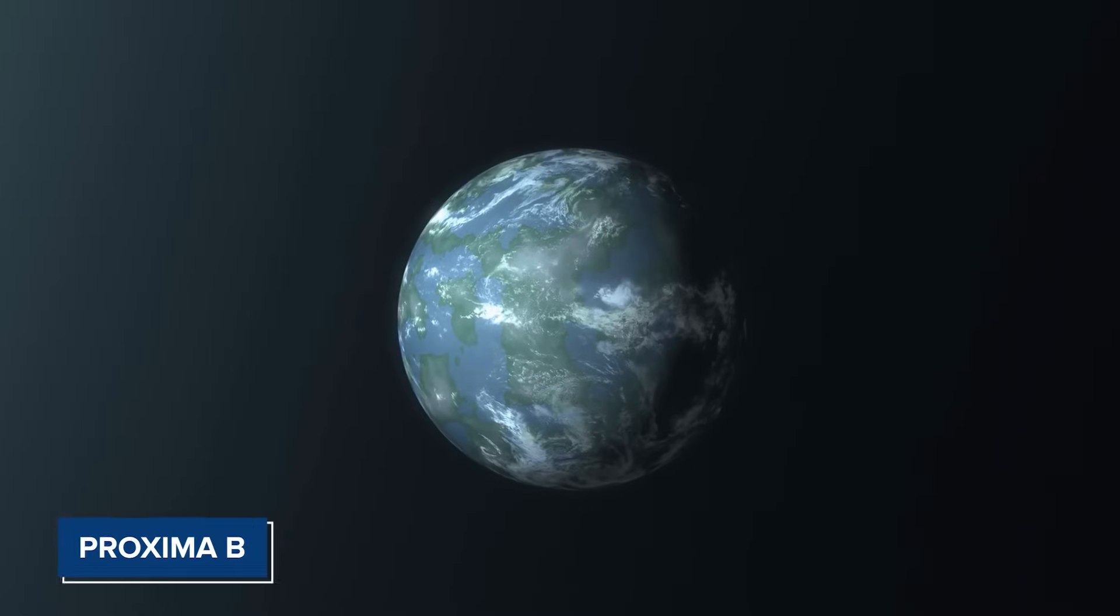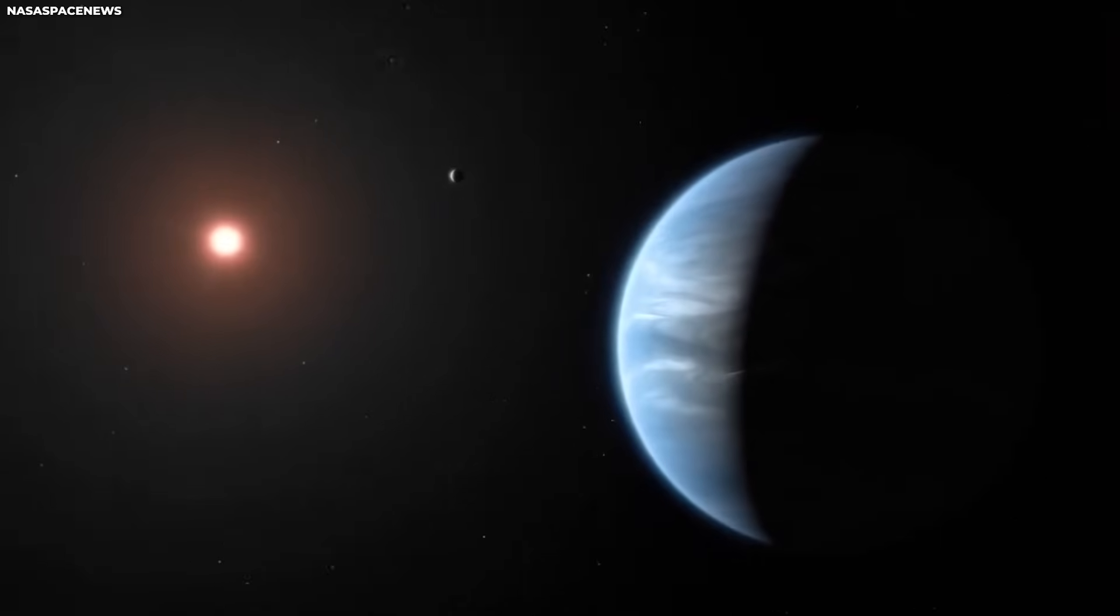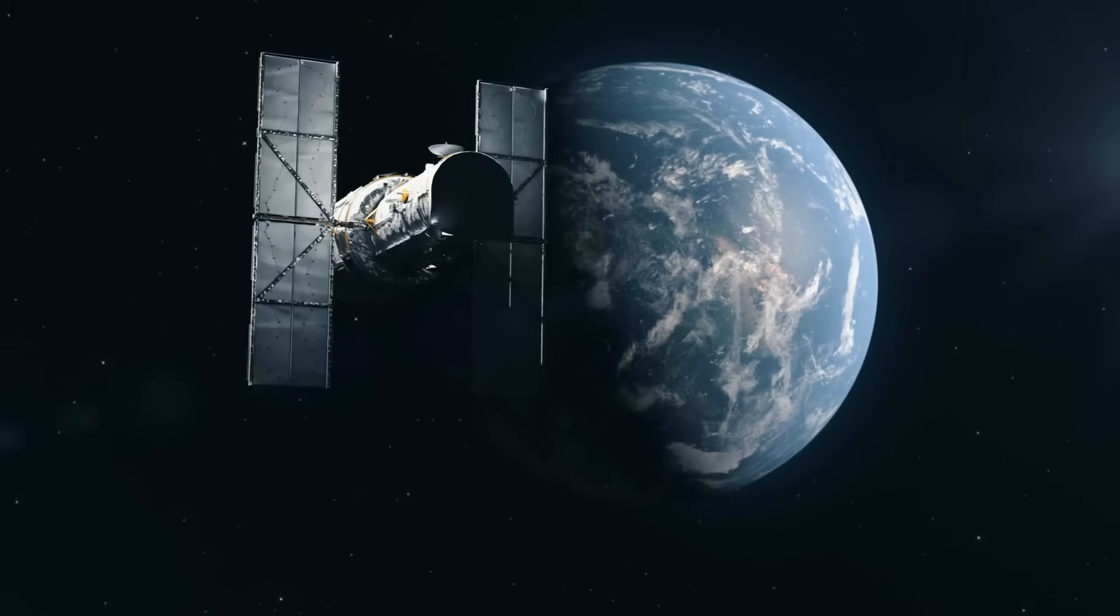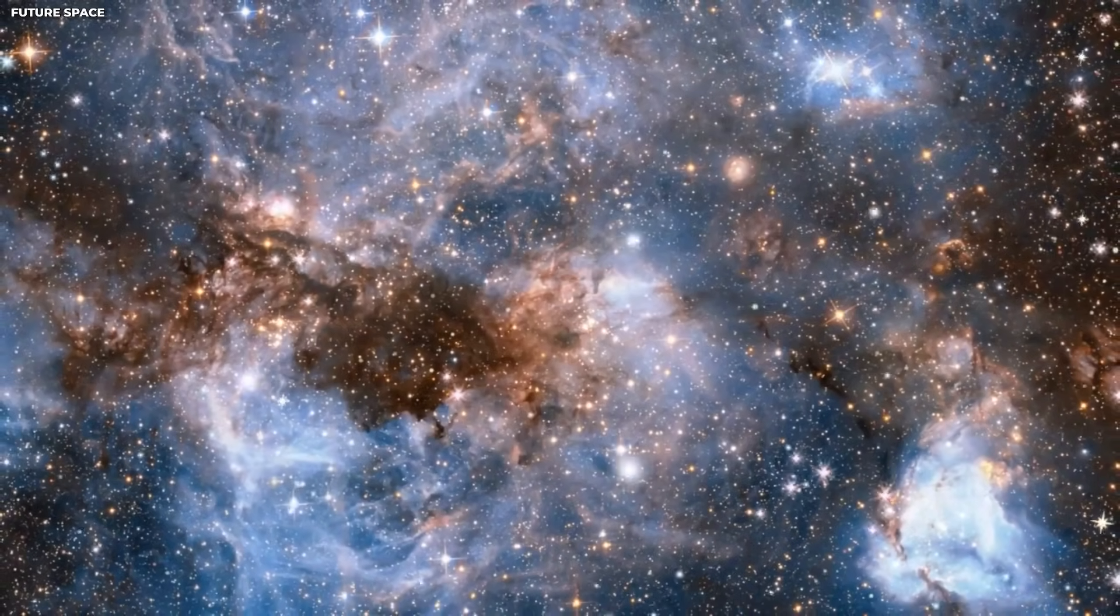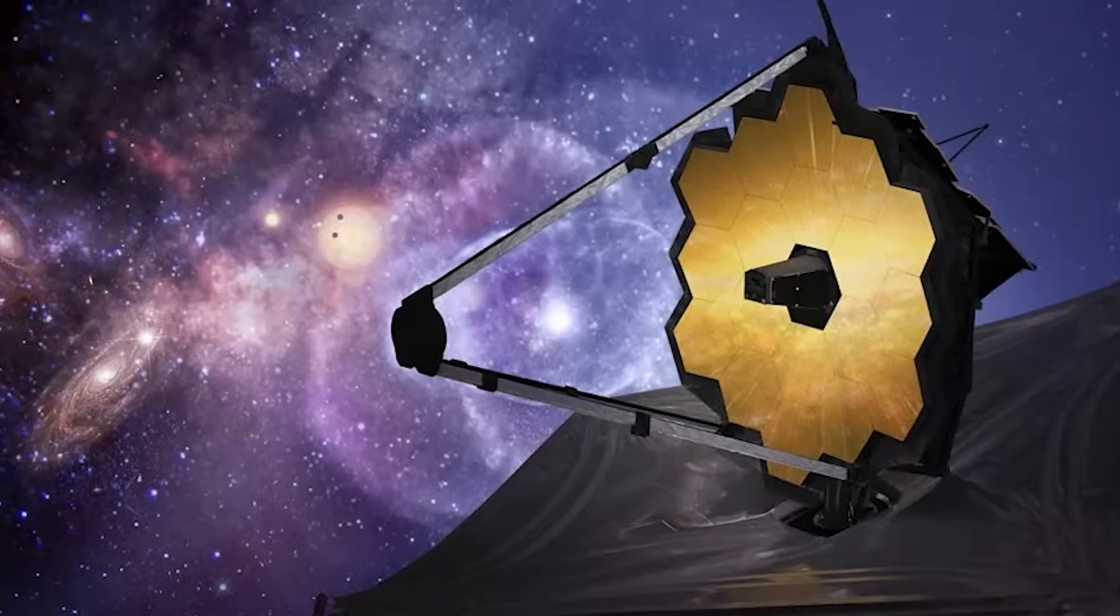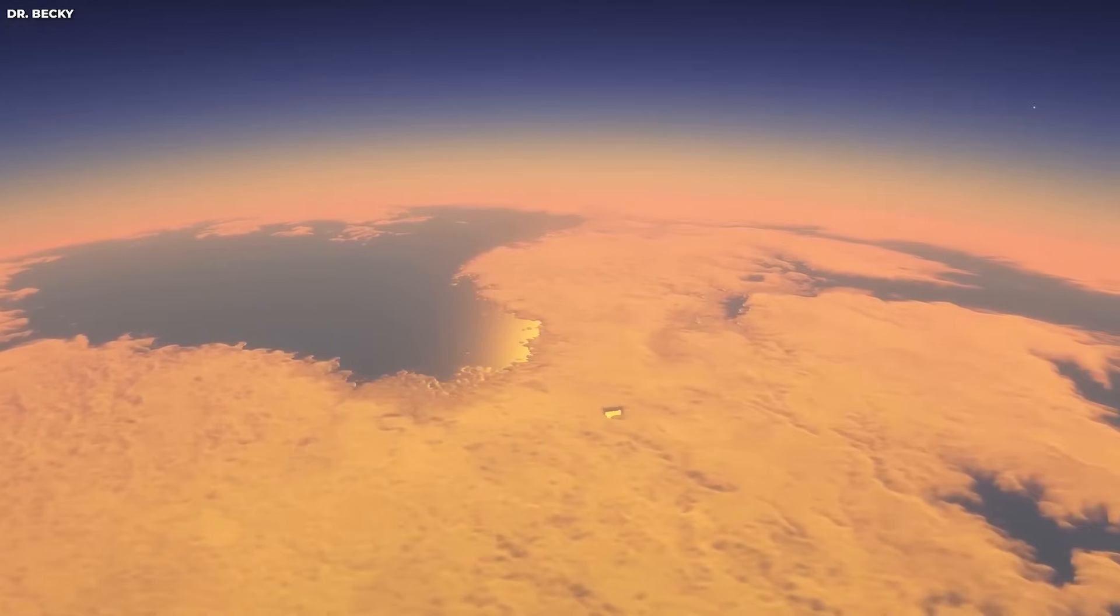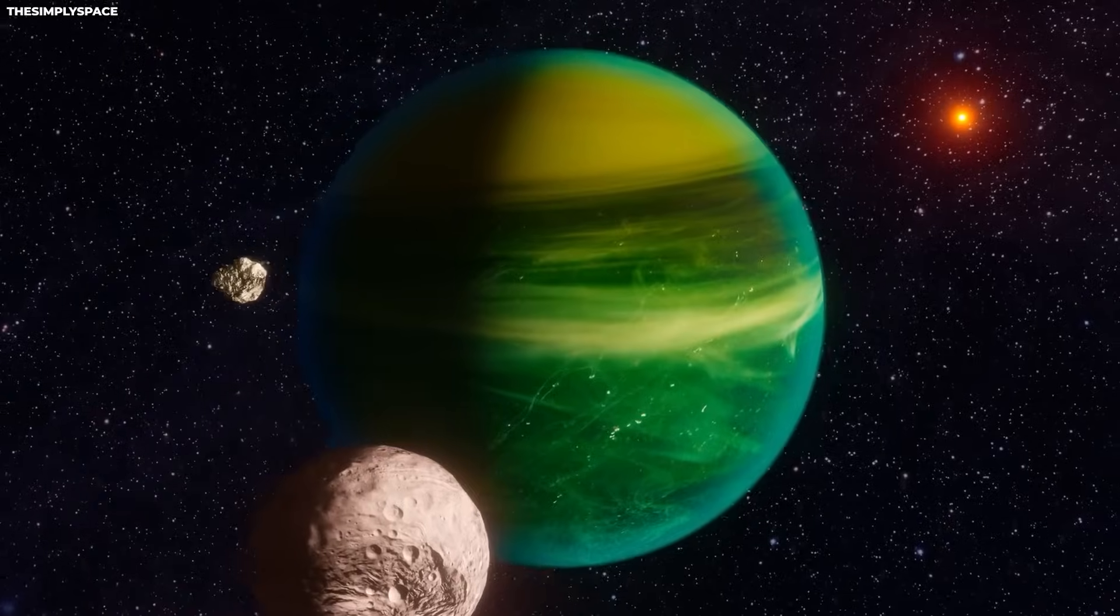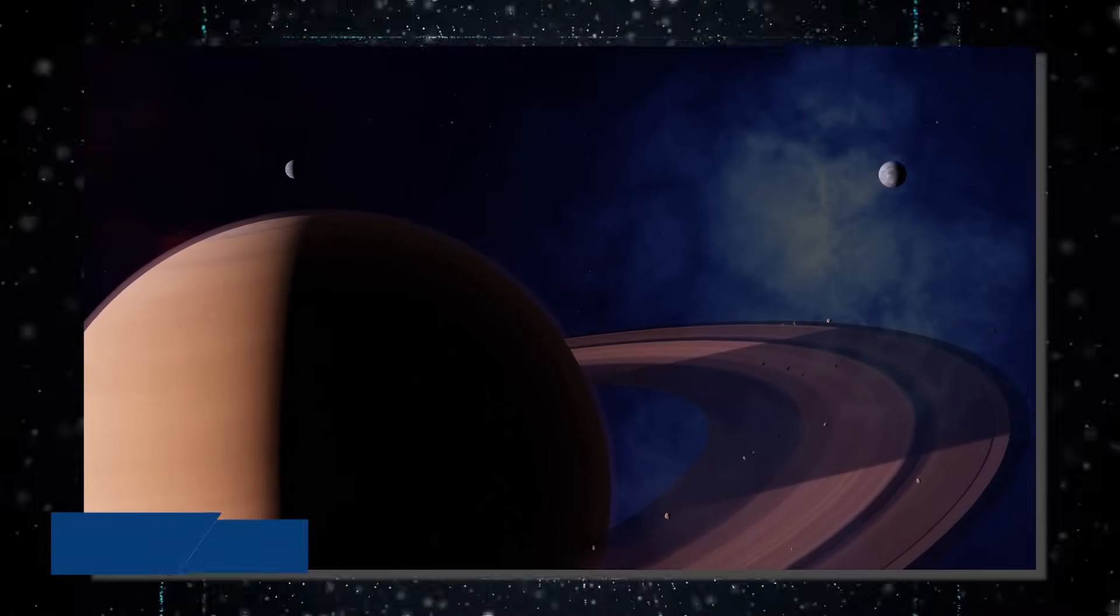For instance, Proxima b, a planet in the habitable zone of Proxima Centauri, is believed to be tidally locked. The telescope could potentially detect artificial illumination on the planet's dark side, even if it's as subtle as Earth's city lights. Future space telescopes may enhance this capability. The JWST represents a significant leap forward in our exploration of the universe. However, it's essential to acknowledge that the pursuit of knowledge is an ongoing endeavor. The JWST's advanced technology and its ability to make observations in the infrared spectrum have opened up new frontiers in astronomy, enabling scientists to study ancient galaxies and potentially detect artificial lighting on distant exoplanets.